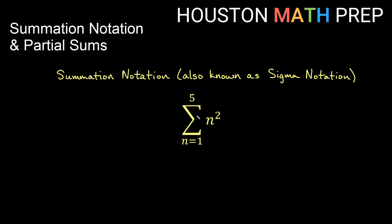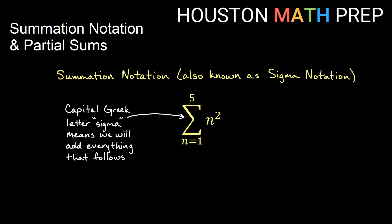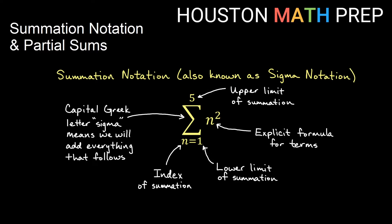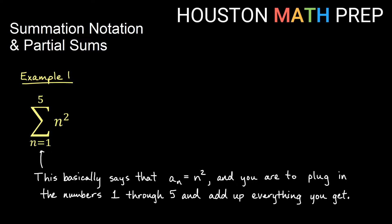We also want to talk about the notation used when summing up terms from a sequence. Our summation notation, also known as sigma notation, uses the capital Greek letter sigma to indicate we're adding everything that follows. The sigma tells us we're adding things, the formula tells us what to plug into, the index at the bottom gives the lower limit of summation where we start plugging in, and the number on top of the sigma is the upper limit of summation.